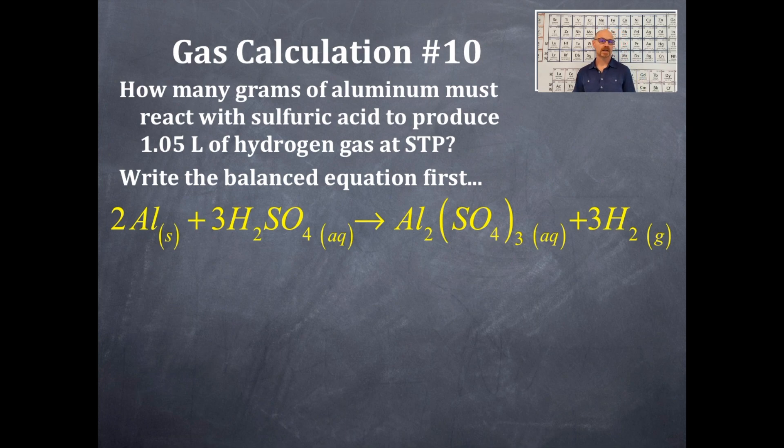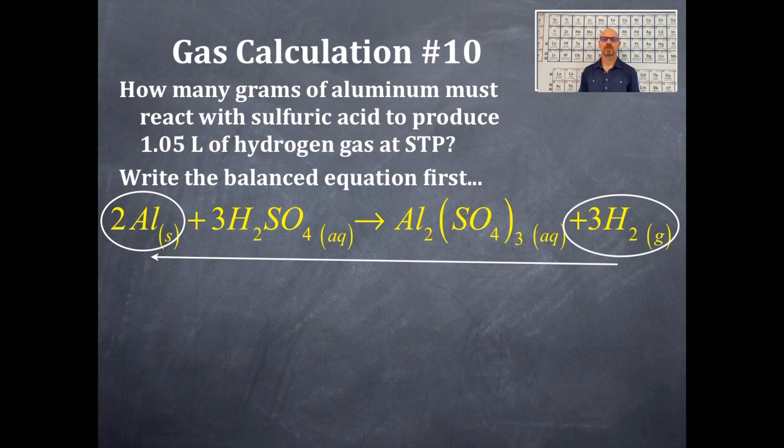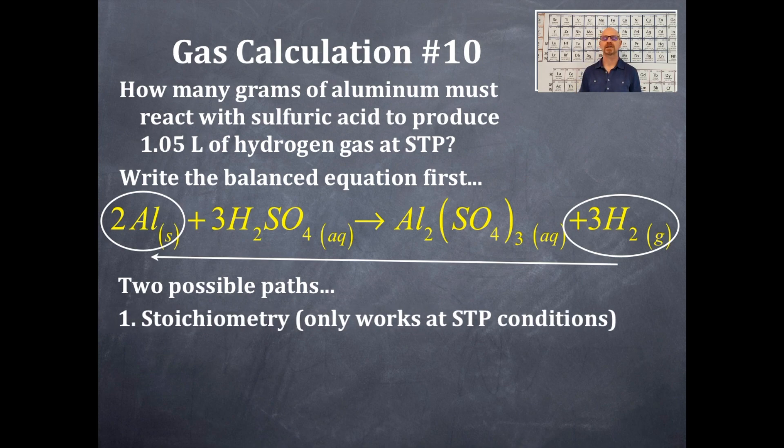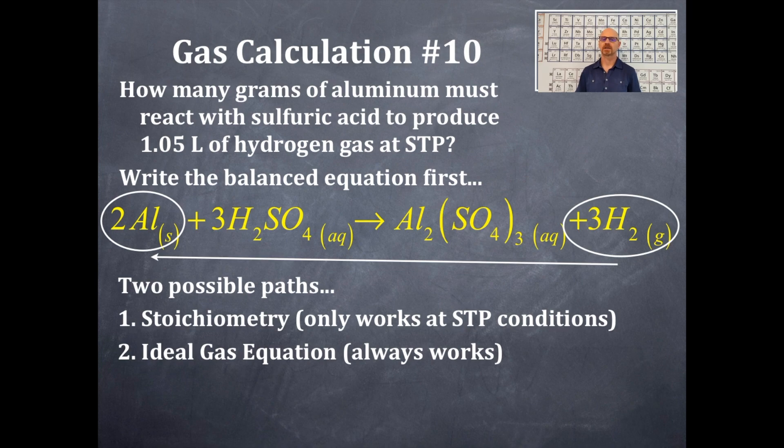Pause the video, give yourself some time, write out the equation, balance it, put the states of matter in there. This is what you should get. Since it's at STP conditions, this is a good thing because this is going to be really nice and easy for us. We are starting off with 1.05 liters of hydrogen gas, and we want to go to aluminum.